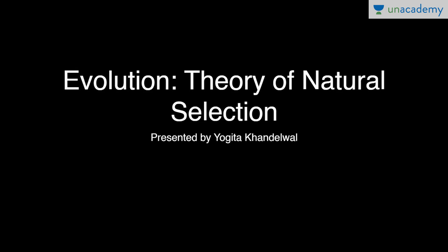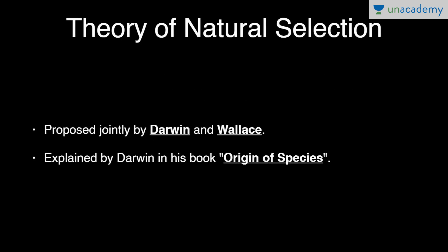Hey guys, in this lesson we will deal with the theory of natural selection from the topic evolution. This is presented by Yogita Khandelwal. In our previous lesson we talked about Darwinism, the theory of biological evolution given by Darwin. Here we are continuing with the theory of natural selection, proposed jointly by Darwin and Wallace, who came to the same conclusion around the same period of time. It was explained by Darwin in his book originally named 'On the Origin of Species by Means of Natural Selection,' later shortened to 'Origin of Species.'